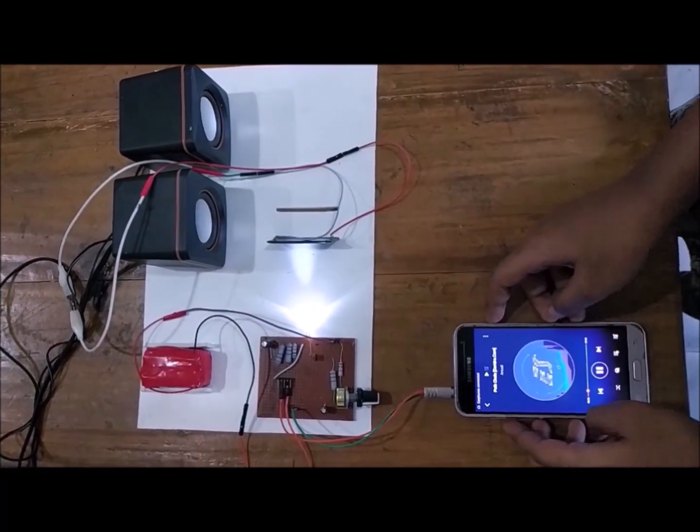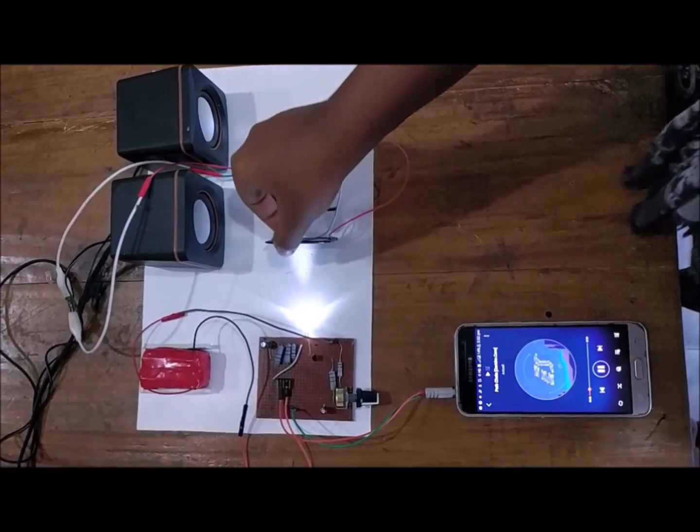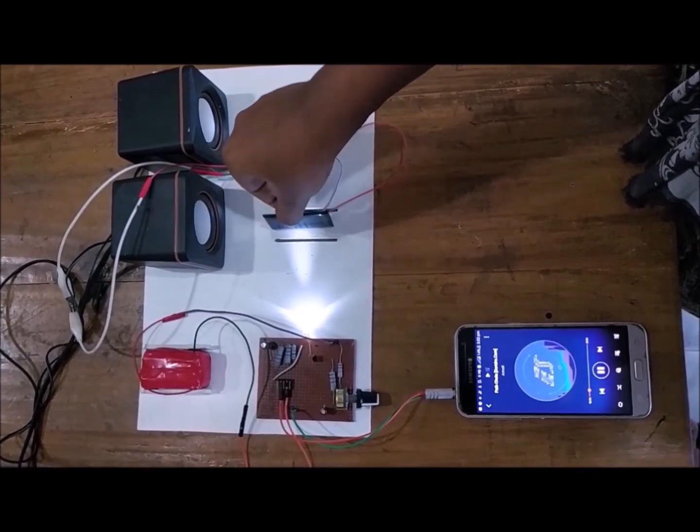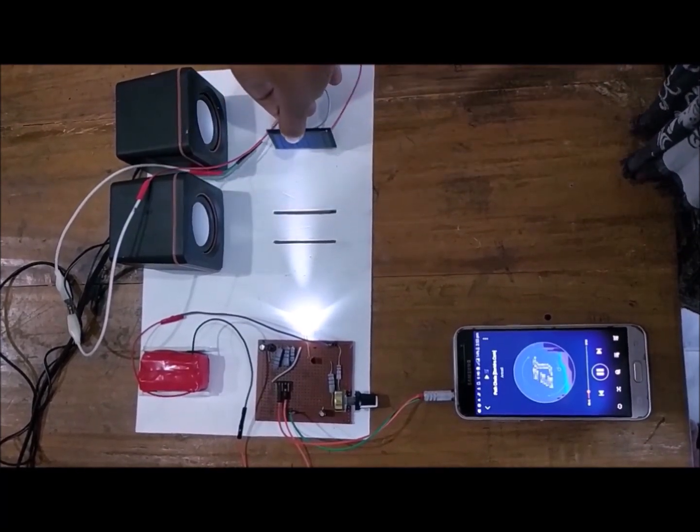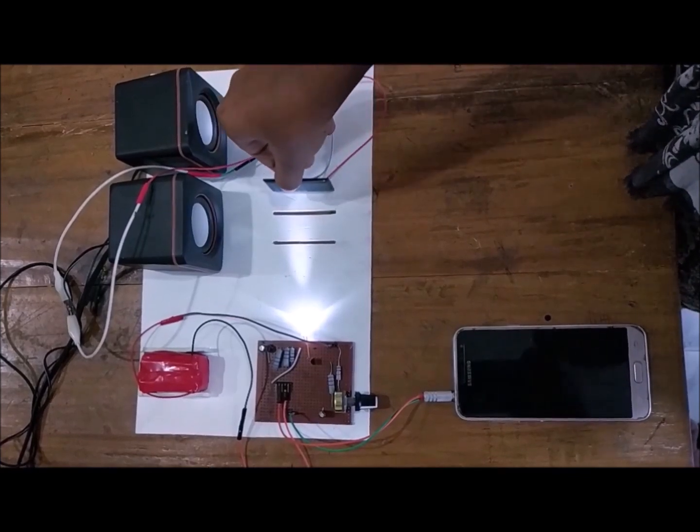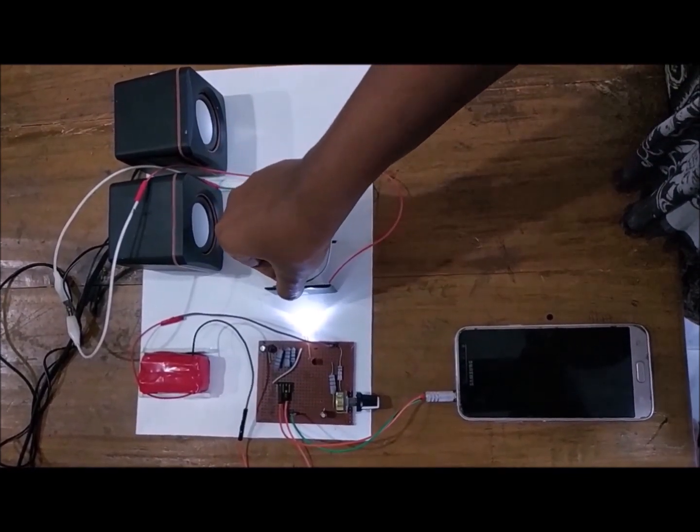Here we get our output. If we change the distance of this solar panel, we can see this affects the transmission process. Again, it is clear that if we take this solar panel to the nearest point of this LED, then the output is very clear.